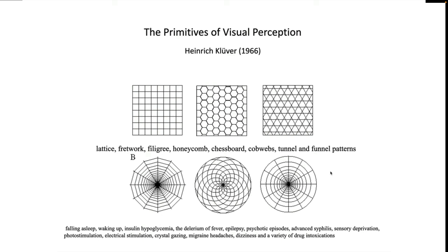It turns out that these kinds of hallucinations are seen in many other examples of neurophysiological stress, including falling asleep, waking up, insulin hypoglycemia, the delirium of fever, epilepsy, psychotic episodes, advanced syphilis, sensory deprivation, photostimulation, electrical stimulation, crystal gazing, migraine headaches, dizziness, and a variety of drug intoxications — these are the primitives of visual perception.